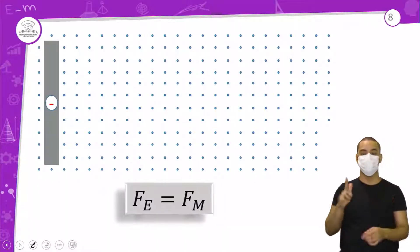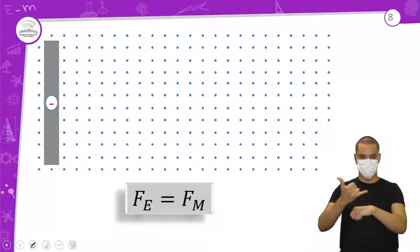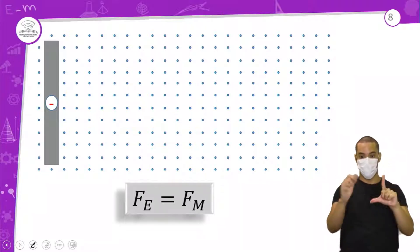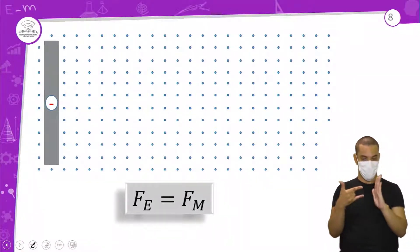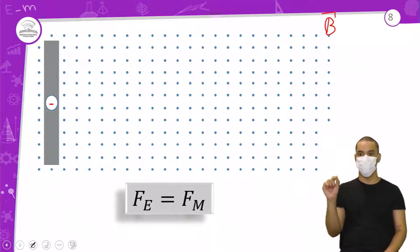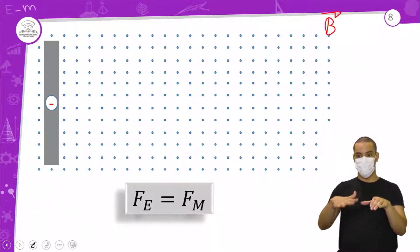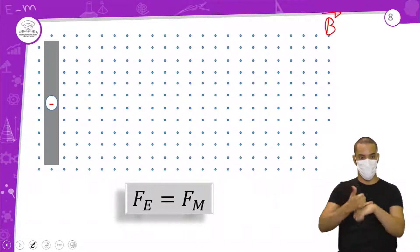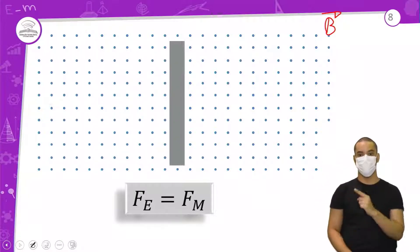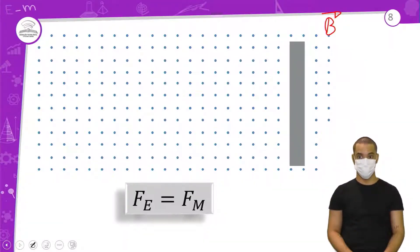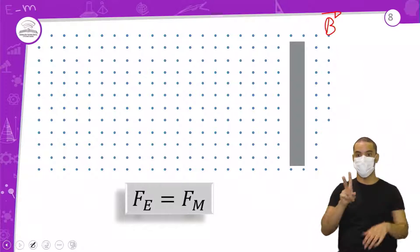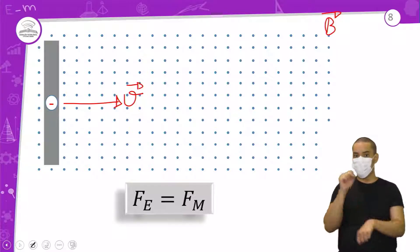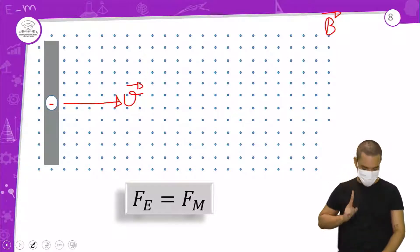Imagina a barra passando por esse campo que está saindo da tela em direção a você — essas pontinhas representam as linhas de campo magnético. As partículas estão dentro dessa barra, e ela vai se mover perpendicularmente, daqui para cá. Imagina que esse movimento continue — ela vai se mover nessa direção e não vai parar. Fazendo a regrinha da mão direita, vou ter uma força magnética que vai fazer algumas cargas se moverem.